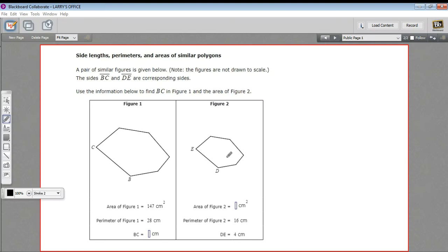In this problem, we are comparing side lengths, perimeters, and areas of similar polygons. We've got two polygons, and they're proportional to each other. This is just a smaller version of this one. By however much this side is smaller than this side, all the sides are that same degree smaller.